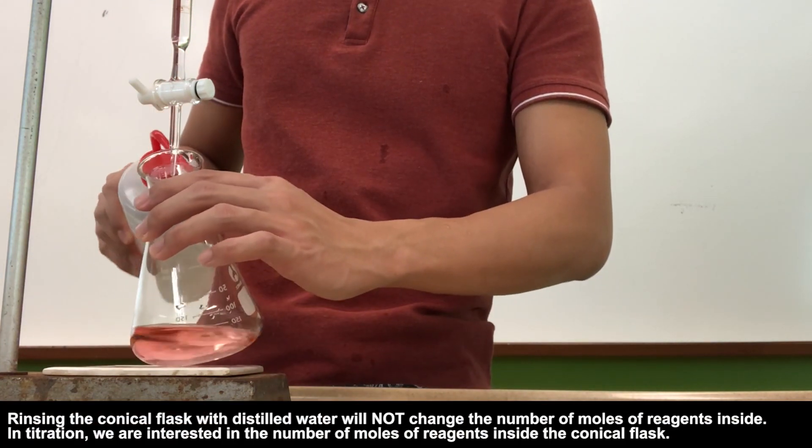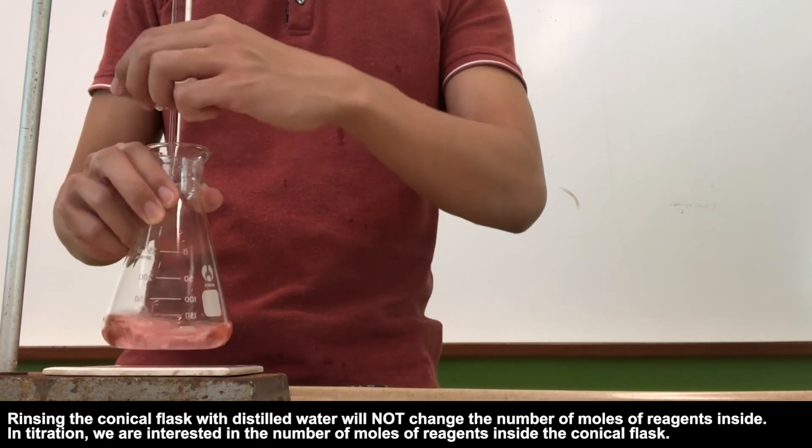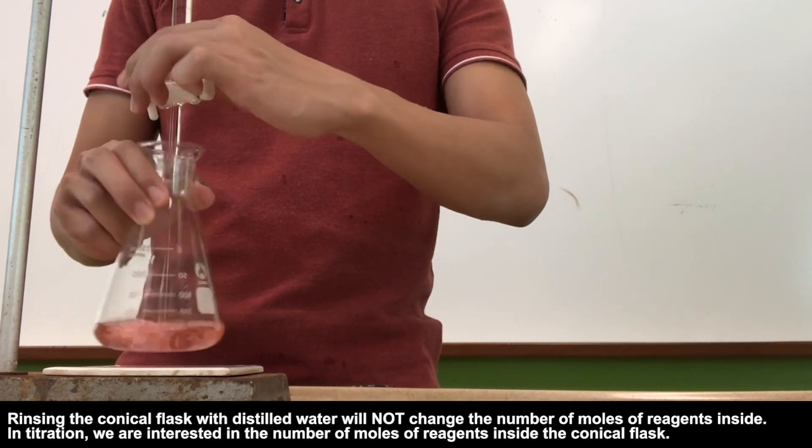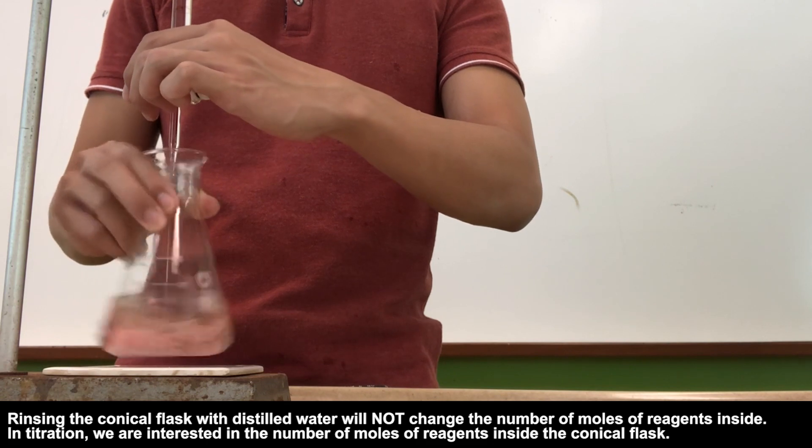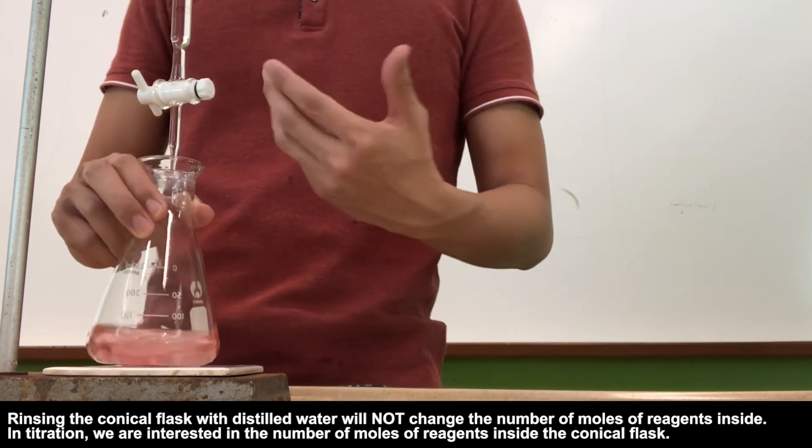If some of the solution were to be splashing onto the side of the conical flask, not to worry. Like what I mentioned, rinse it with distilled water. The total number of moles of chemicals did not change, so it really doesn't matter when the distilled water is being added in. So not to worry too much about it.